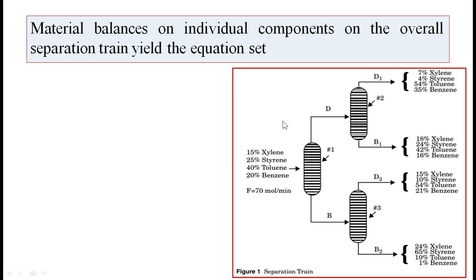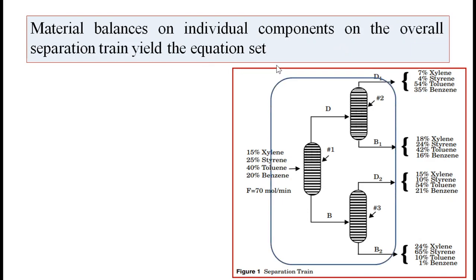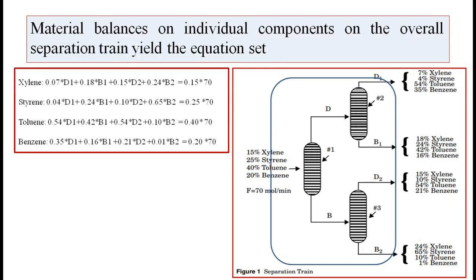All these streams contain all four components but with different compositions. We apply material balances on individual components over the overall separation train. This yields an equation set — four equations for xylene, styrene, toluene and benzene. Here D1, B1, D2, and B2 are the unknowns we have to find, and the right-hand side of all these equations forms one column matrix.